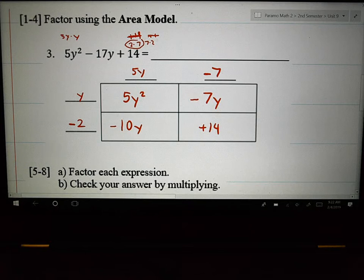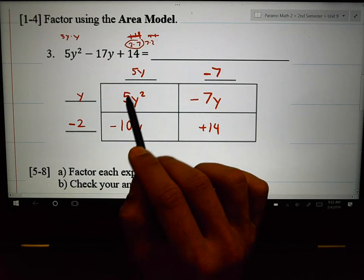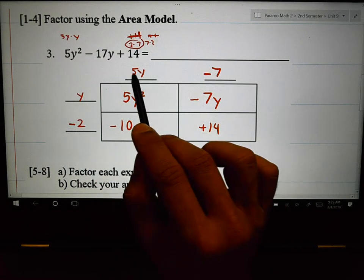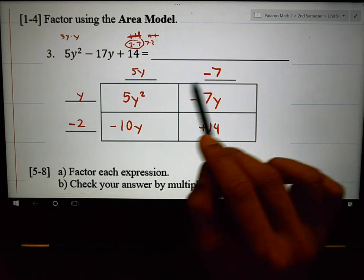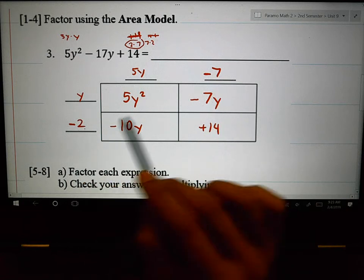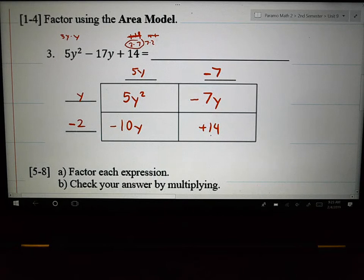Let me just check that real quick. 5y times y is 5y squared. 5y times negative 2 is negative 10y. That works. Let's do y times negative 7 is negative 7y. Negative 2 times negative 7 is a positive 14. That would work.